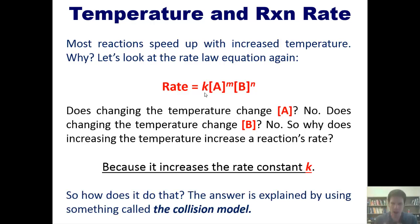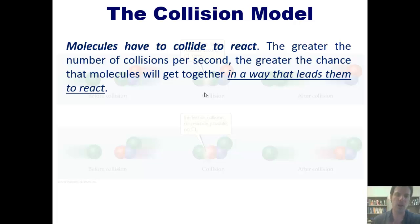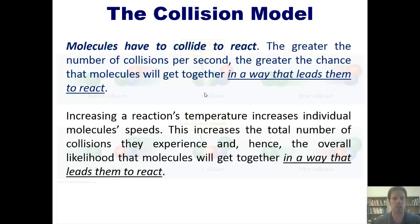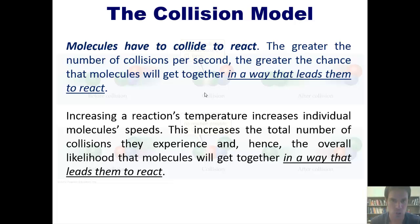Why does temperature affect K? The answer is explained using something called the collision model. Molecules have to collide to react. The greater the number of collisions per second, the greater the chance that molecules will get together in a way that actually leads them to react. Increasing a reaction's temperature increases individual molecule speeds, which increases the total number of collisions and hence the overall likelihood that molecules will react.